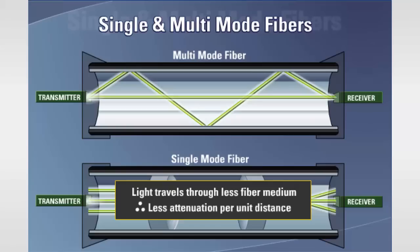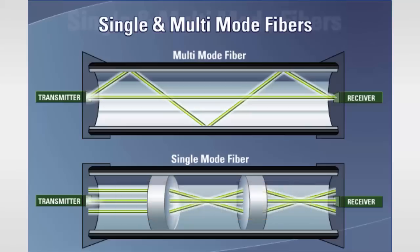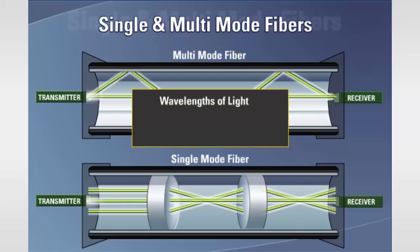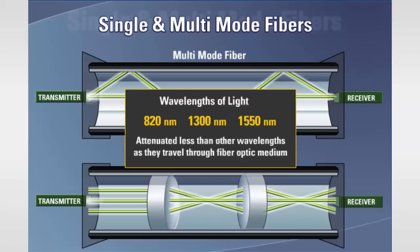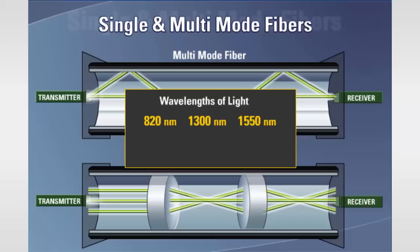As a result, for a given wavelength of light, single-mode fiber typically has less attenuation per unit distance than multimode fiber. The wavelengths of light used in fiber-optic communication are 820, 1300, and 1550 nm, because these wavelengths are attenuated less than other wavelengths as they travel through the fiber-optic medium. Traditionally, 820 nm cable has been offered only in multimode, but recently single-mode 820 nm cables have come into existence. 1,300 nm cable is offered in both single and multimode, while 1,550 nm cable is typically only offered in single-mode.